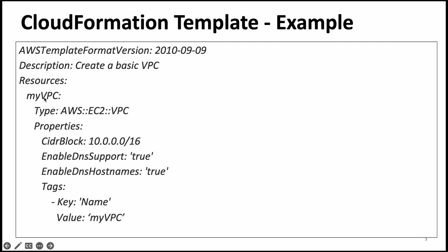Under resources, you give a name or ID for the resource you are going to create, then you specify the type — here the type is VPC. If you are wondering how to remember the resource types for VPC, EC2, or security groups, there is enough documentation available and many sample CloudFormation templates you can refer to. Under resources you also have properties, which are nothing but configuration parameters. For a VPC you need to mention the CIDR block, such as 10.0.0.0/16, along with a few other configuration parameters.